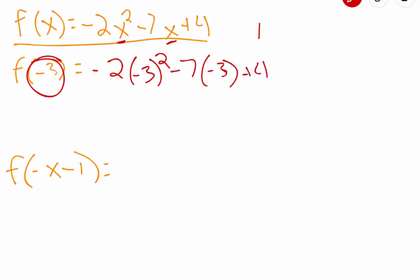Now remember your order of operations. Please excuse my dear Aunt Sally. Parentheses, exponents, multiplication, division, addition, subtraction. So for us, we need to take care of our exponent here. Drop down the negative 2, negative 3 squared, negative 3 times negative 3 is 9. And I'm just going to go ahead and drop everything else down.